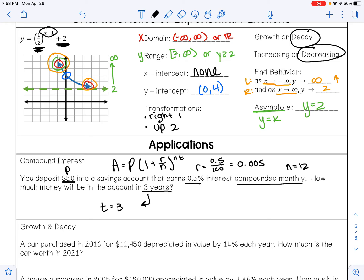So let's plug all that into our formula. I'll have A equals 50 times (1 plus 0.005 over 12) raised to the 12 times 3 power.